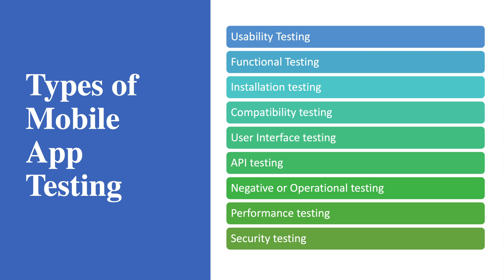Second is functional testing. Installation testing is critical for mobile — you need to test that your app installs correctly on different devices, different OS versions, and different form factors like tablets and mobiles. Upgrade testing is also important since users keep upgrading from existing versions. Compatibility testing checks how well the app works across different OSes, manufacturers, and device types. User interface testing is critical too, since we need to check UI across many different screen sizes, including foldable devices.